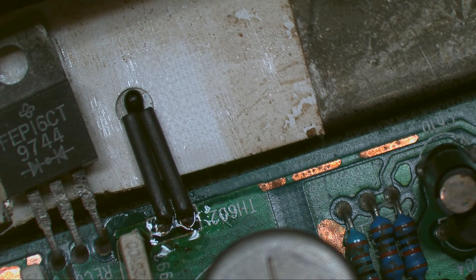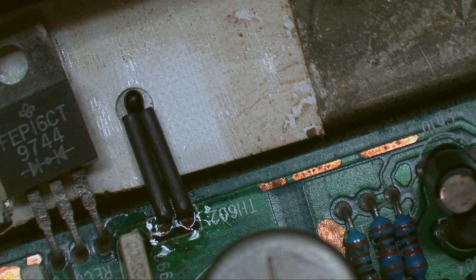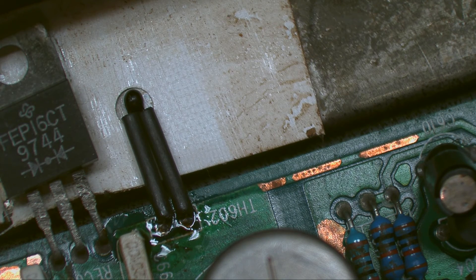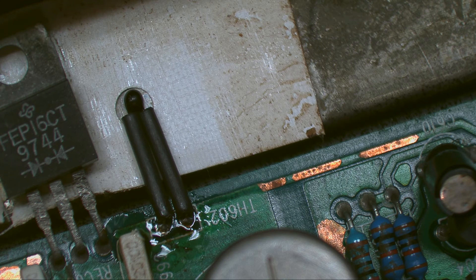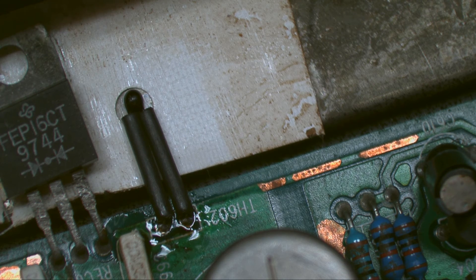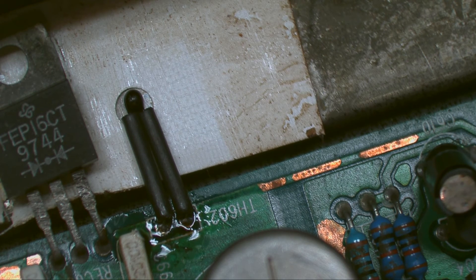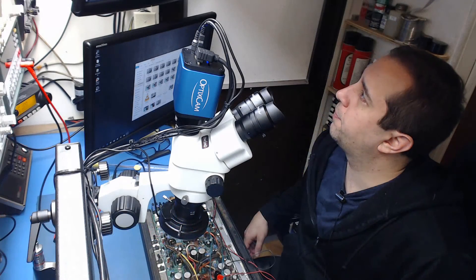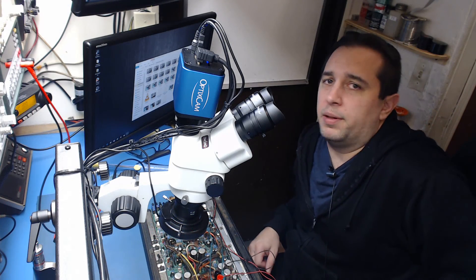So now all I have to do is put the foam back on there when I put the heat sink back on, and this amp is back in business for thermal overload. So yeah, that's a very simple, easy repair.